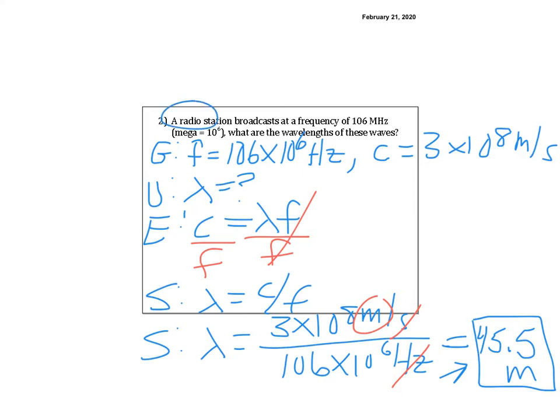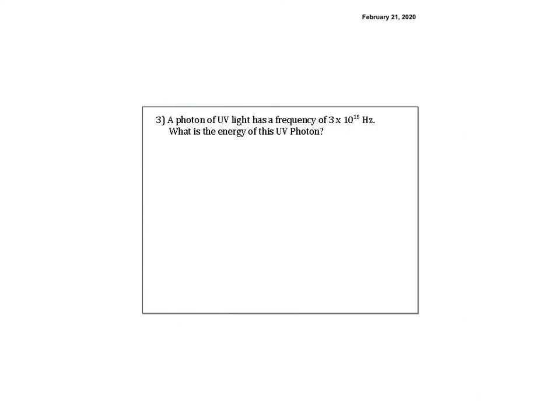Notice this wavelength is much, much larger for a radio wave — a huge difference in the size of the wavelength compared to visible light. A photon of UV light should have even smaller wavelengths than visible light because we're moving up the spectrum. It has a frequency of 3 times 10 to the 15th Hertz — much higher than our first problem's 10 to the 14th.